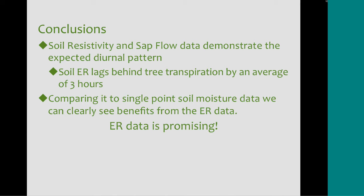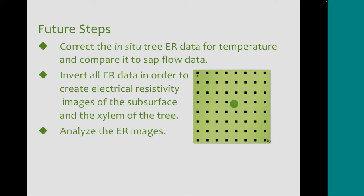In conclusion, soil resistivity and sap flow data both demonstrate the diurnal pattern we were expecting, which is a good sign, and the average lag between our datasets was about three to four hours. Comparing the soil moisture sensor data to our electrical resistivity data, we also see that electrical resistivity is much better at measuring soil moisture. Our electrical resistivity data is very promising, and once we get to the stage where we can create the images I talked about, we'll hopefully be able to see the flow paths of water in the subsurface throughout the day.